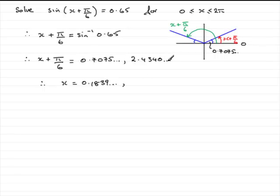Do the same for this, 2.4340, take away pi upon 6 and you should end up with 1.9104 and so on.